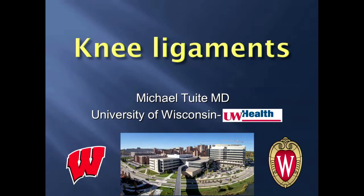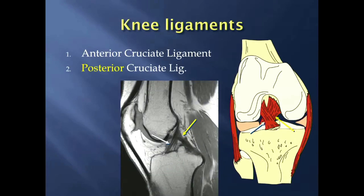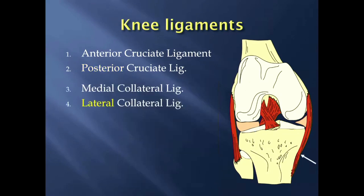The first two ligaments to mention are the anterior cruciate ligament and the posterior cruciate ligament. Cruciate is Latin for cross, and if you notice on this sagittal proton density MR image, the ACL and PCL cross each other, and on a frontal view, the ACL and PCL cross each other as well. So those are the two cruciate paired ligaments.